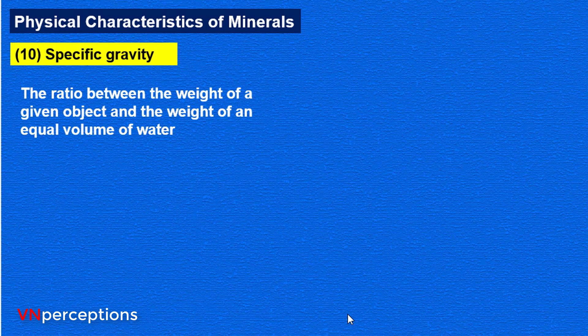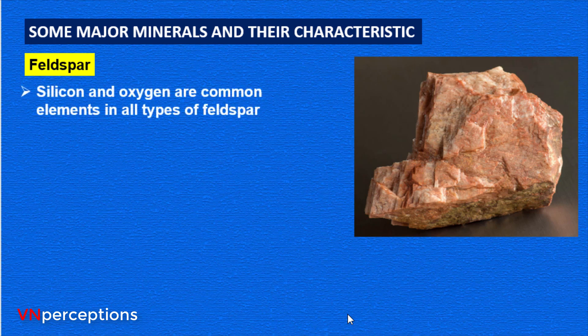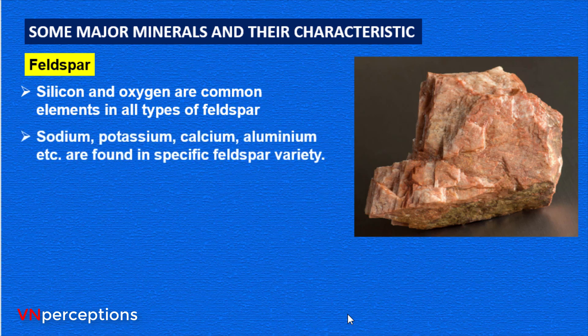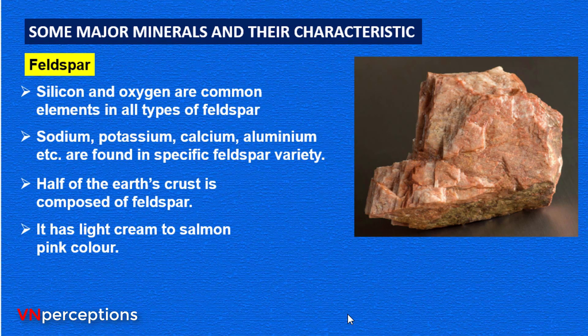Now we learn some minerals in detail. The first one is feldspar. Feldspar is mainly made up of silicon and oxygen, which are common elements in all types of feldspar. Sodium, potassium, calcium and aluminium are found in specific feldspar varieties. Half of the earth's crust is composed of feldspar. It has a light cream to salmon pink color and is widely used in ceramics and glass making.